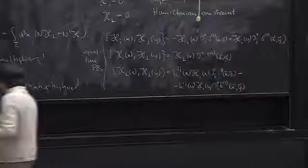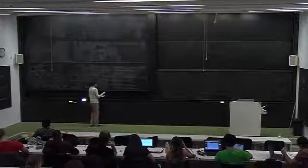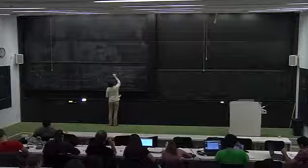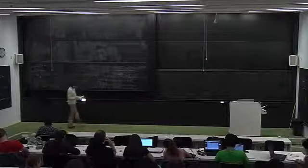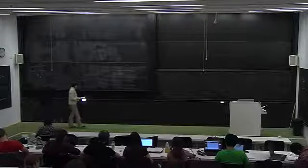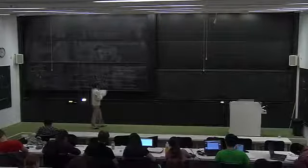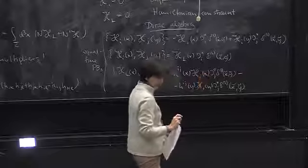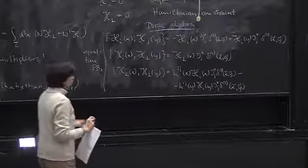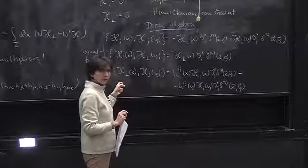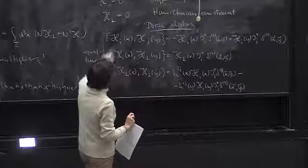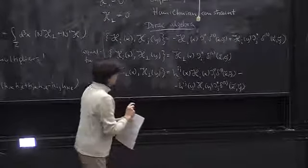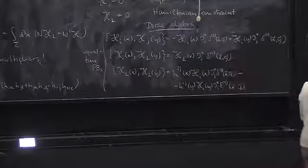This whole set of expressions — the algebra they generate — goes by the name of the Dirac algebra. If one wants to get rid of these singular right-hand sides, a procedure that is strongly recommended in actual calculations is to smear out these phase-space functions, by integrating them against test functions.